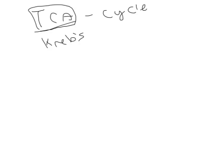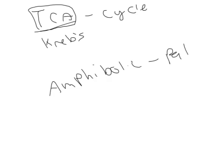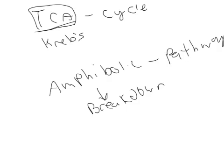The TCA cycle is an amphibolic pathway, and what that means is that it can be used as a pathway to break down intermediates of fatty acids, amino acids, and glucose.